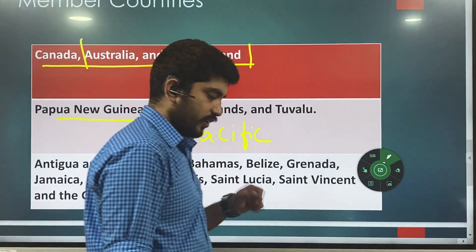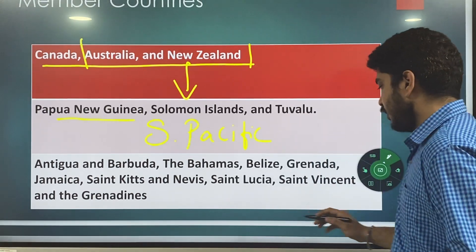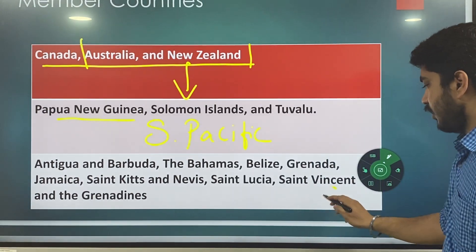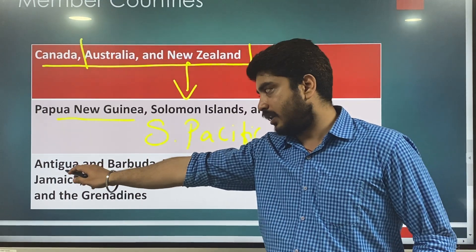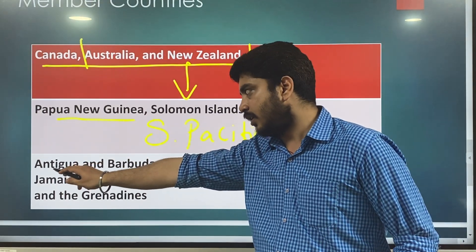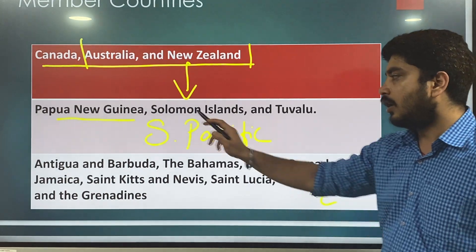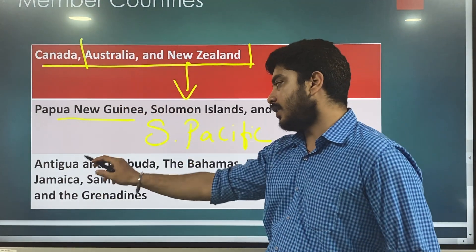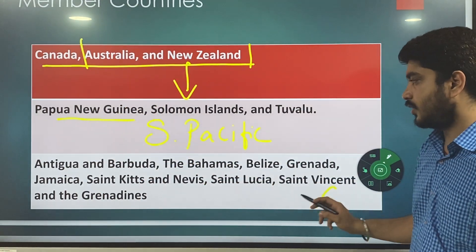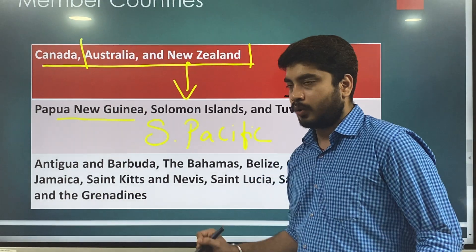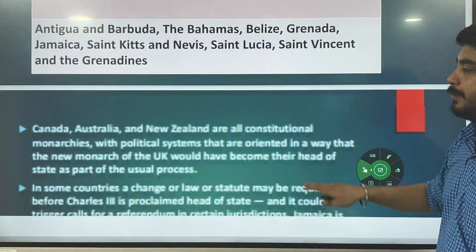Then you have one more set of countries from a different location — that is the Caribbean region, or the Central American region. These are the Caribbean islands: Antigua and Barbuda, the Bahamas, Belize, Grenada, Jamaica, St. Kitts and Nevis, St. Lucia, and St. Vincent and the Grenadines. These are one more set of countries in the Caribbean region.